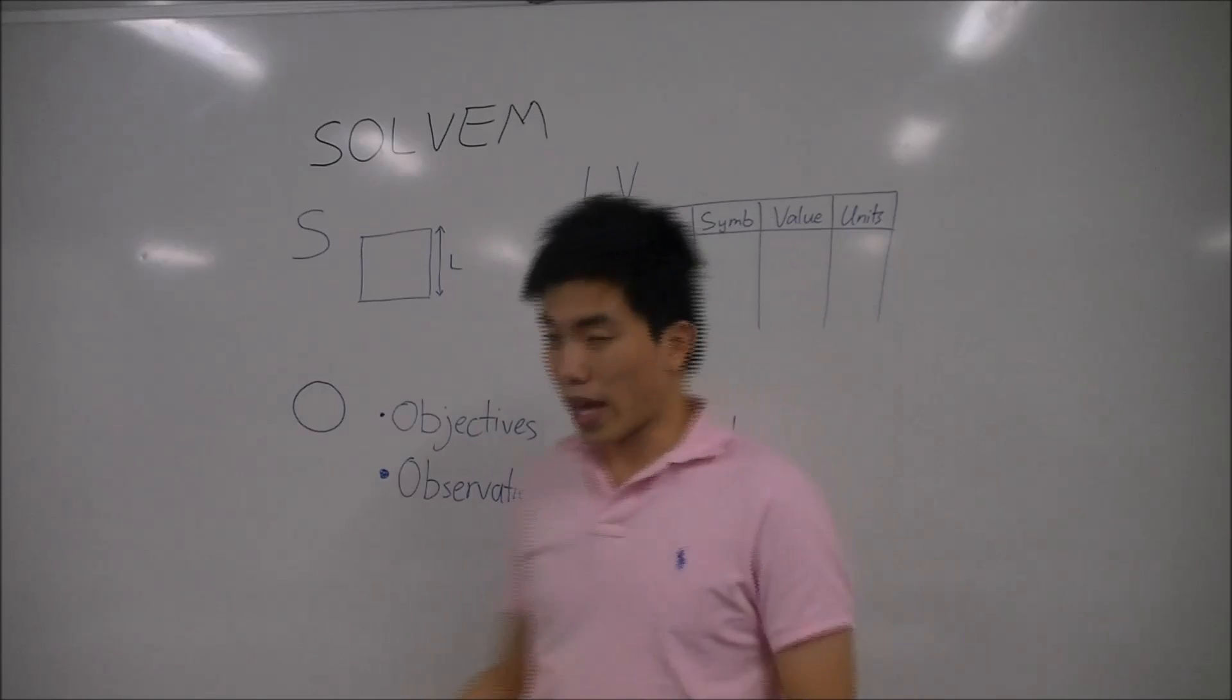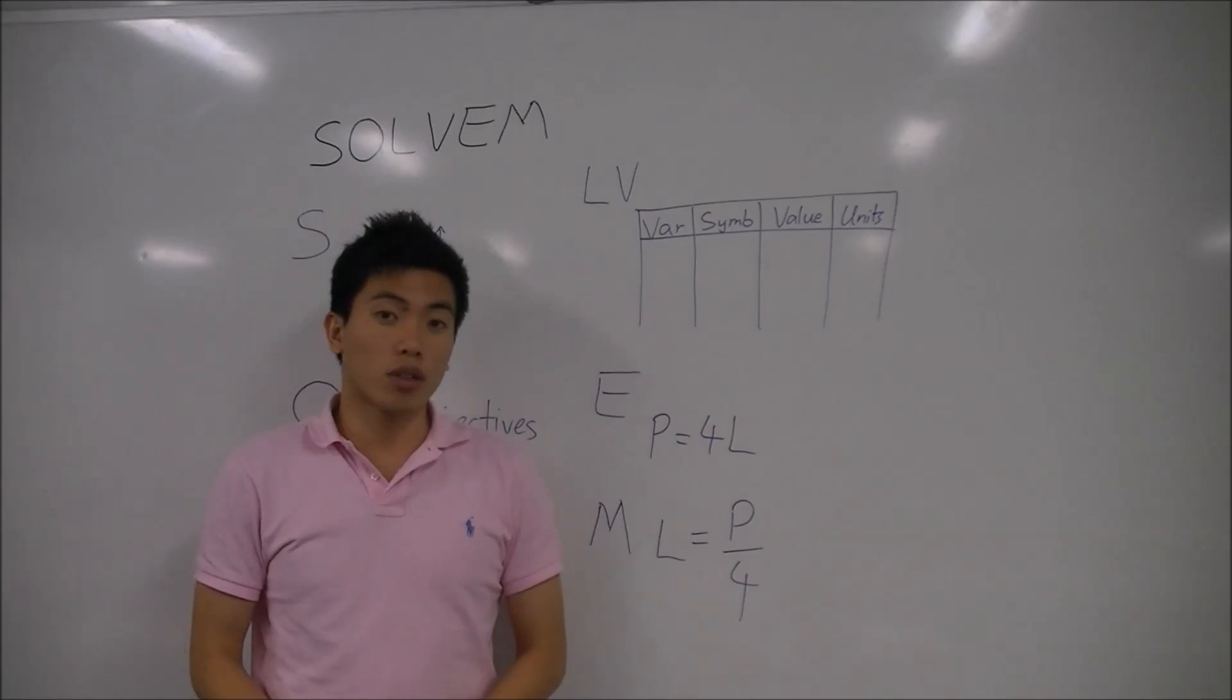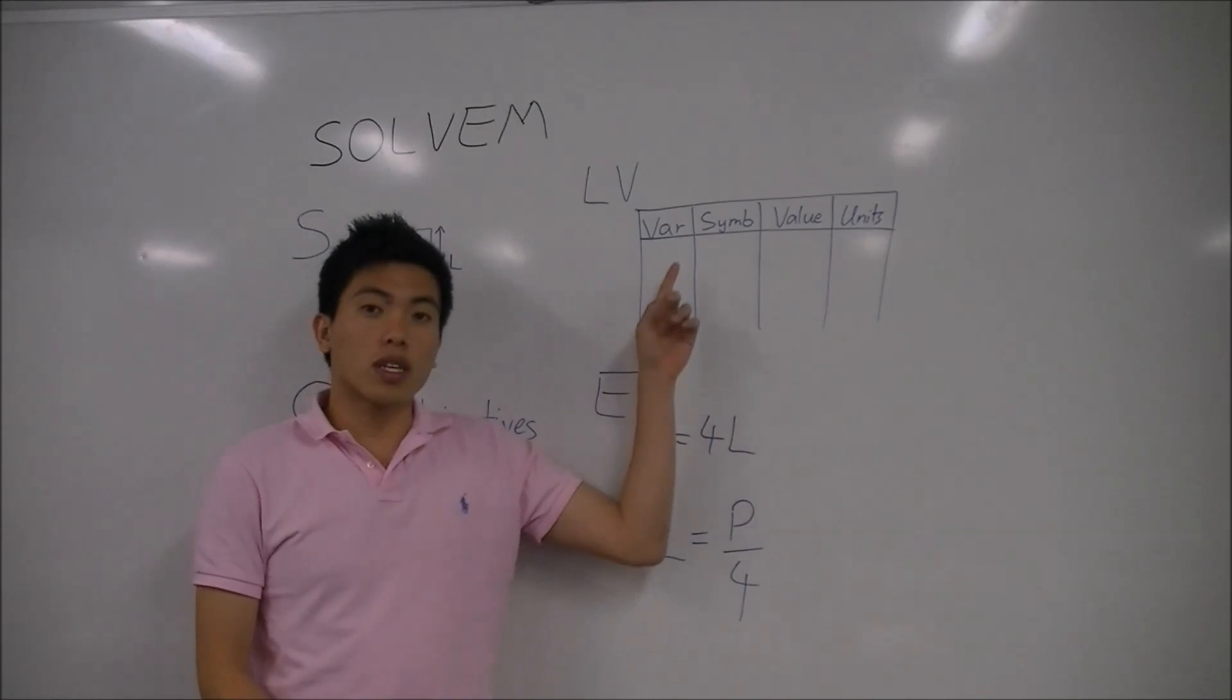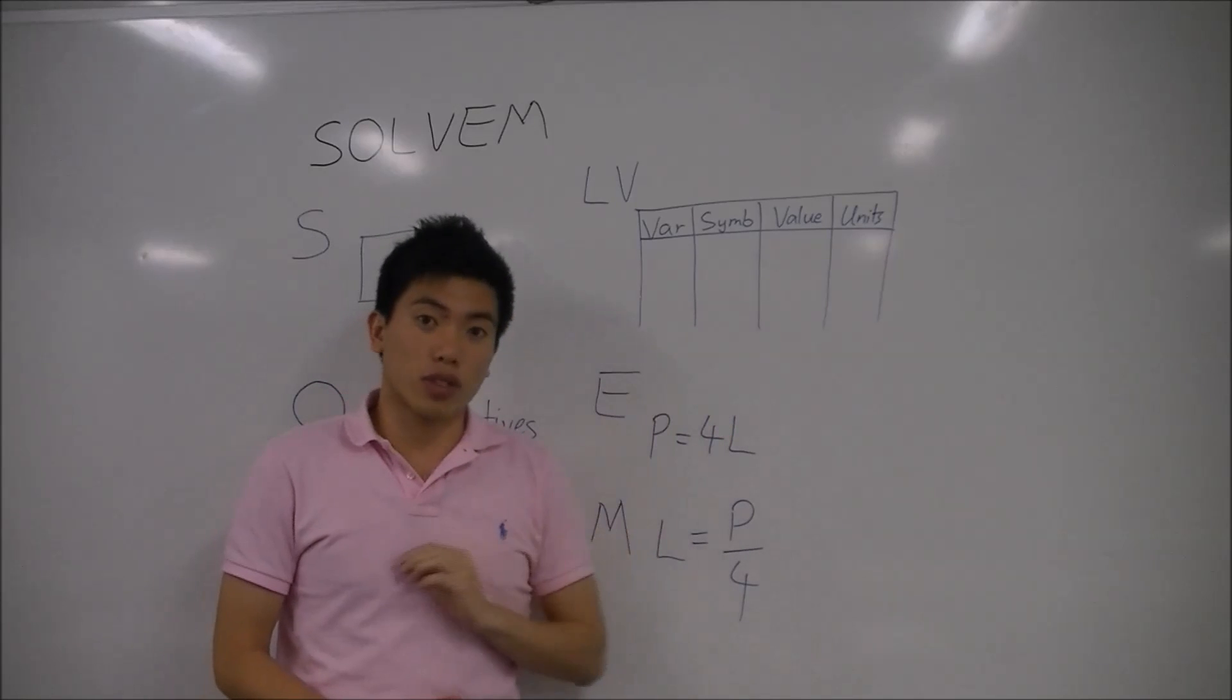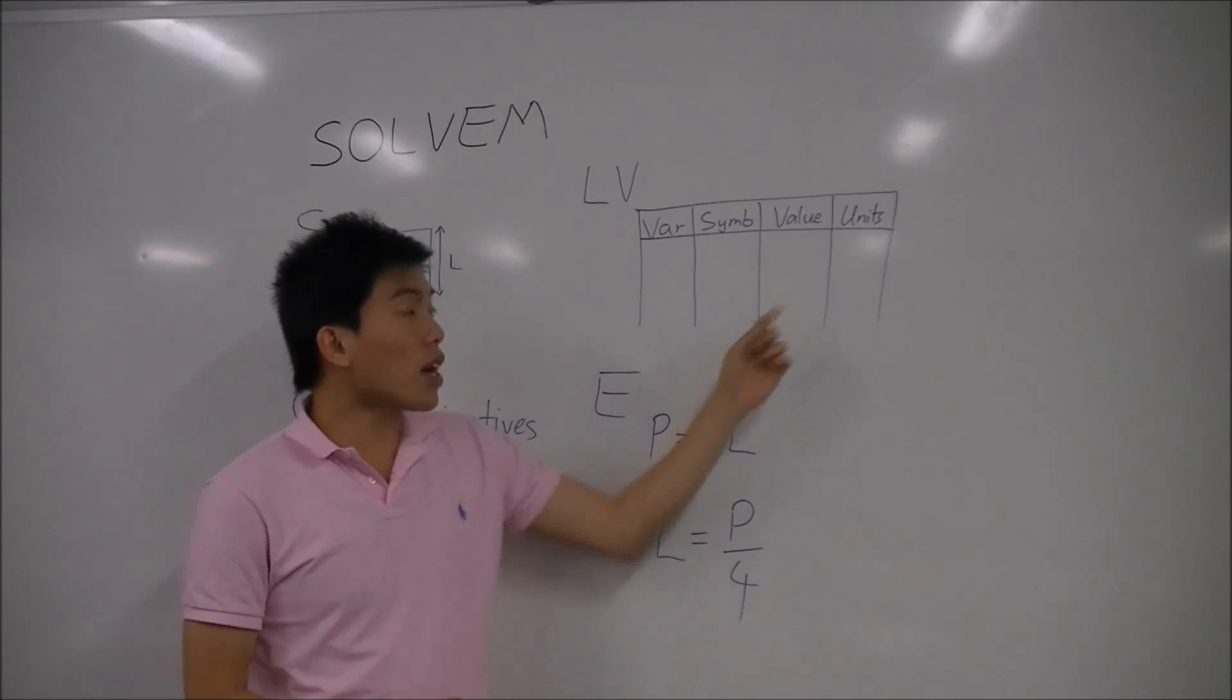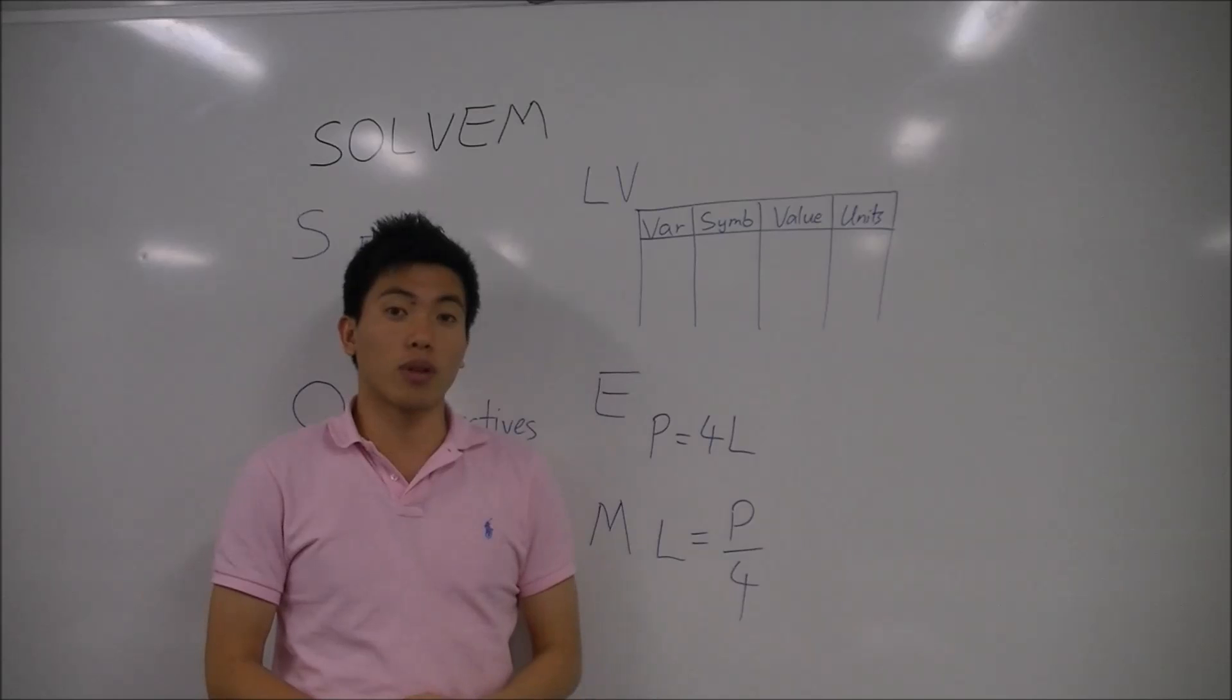Across to my L and V, which is the list of variables and constants, we're looking for you to do four components. We want to see that you write out the variable, or the constant, then give us the symbol that represents it, tell us the value if it's known, and finally give us the units of that variable or constant.